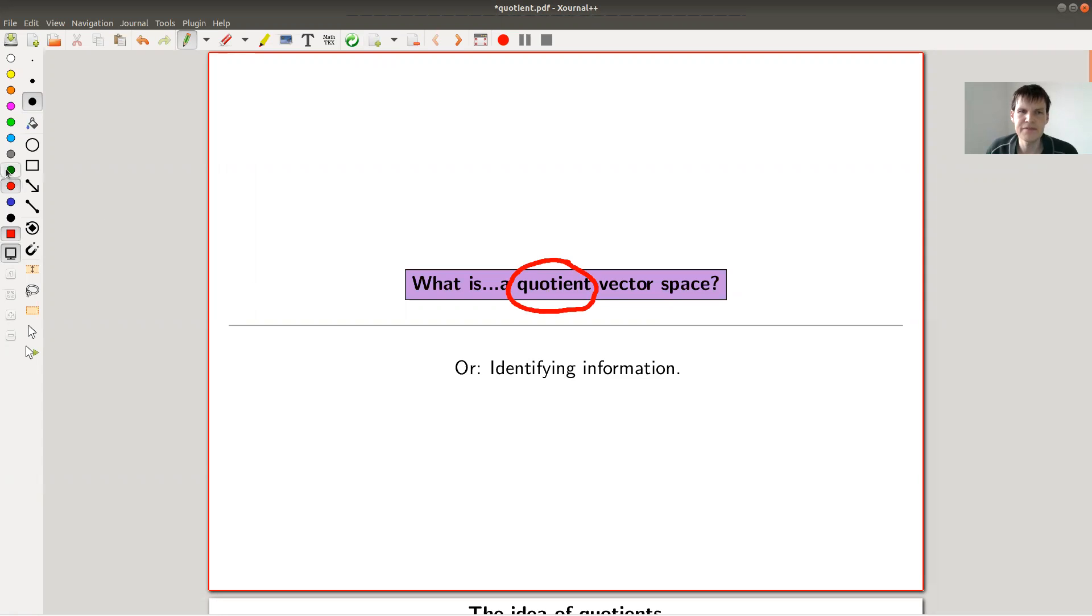But there's this main idea which I want to explain basically, and this is how in mathematics we like to identify information. Not just in mathematics, it's just a general concept all of us do every day. There's just too much information out there. In some sense, you declare things to be equal. And the linear version of this is just a quotient vector space. Okay, so let's just jump right into it.